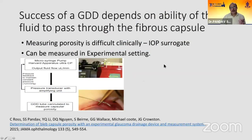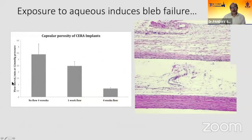The success of the GDD depends on the ability of fluid to pass through the fibrous capsule. Clinically there's no way to measure porosity, but experimentally we did experiments to see what determines implant porosity. There is a concept of 'good aqueous and bad aqueous' — sometimes traps fail because the aqueous has cytokines that induce fibrosis.